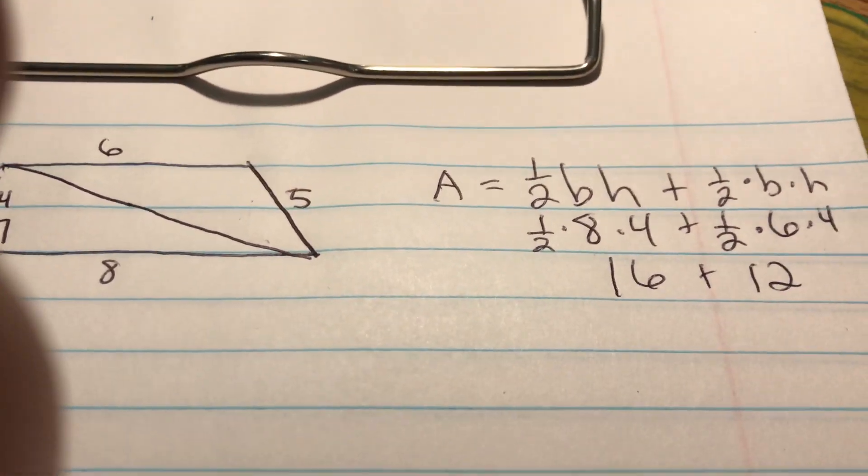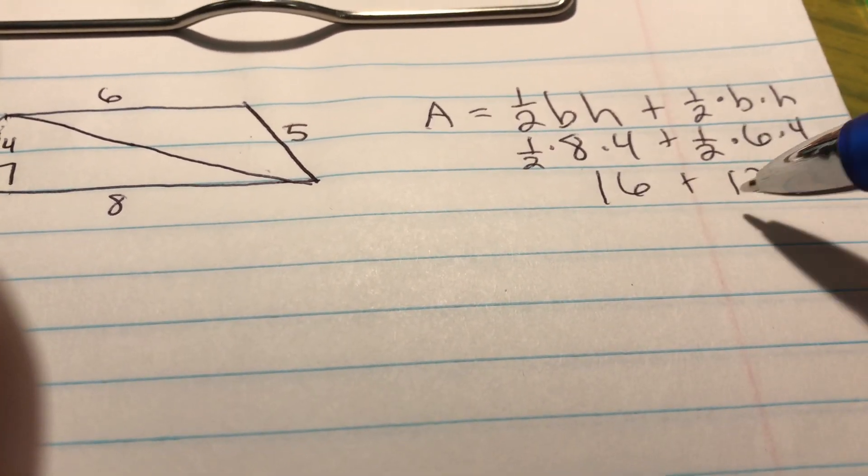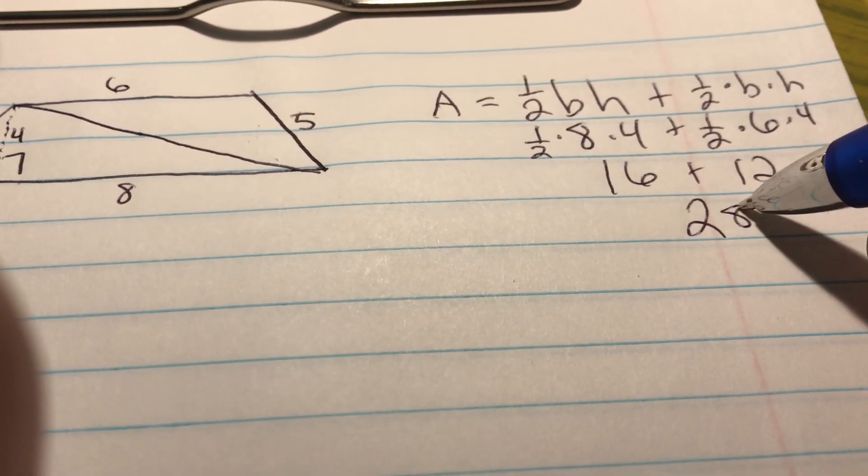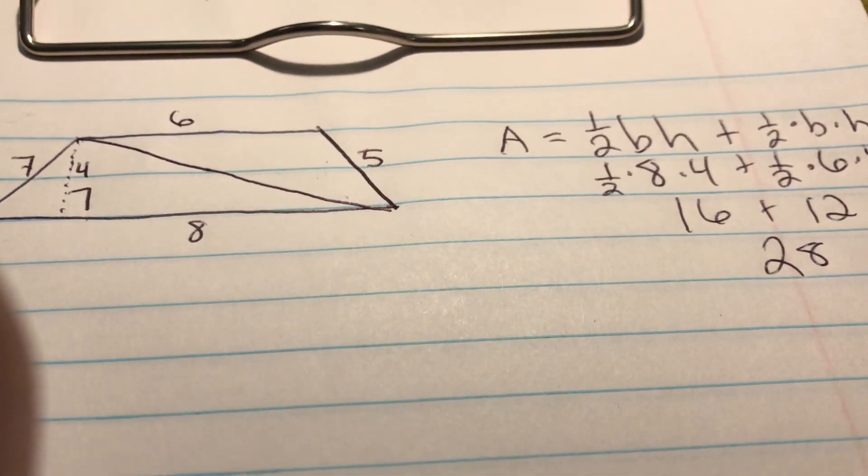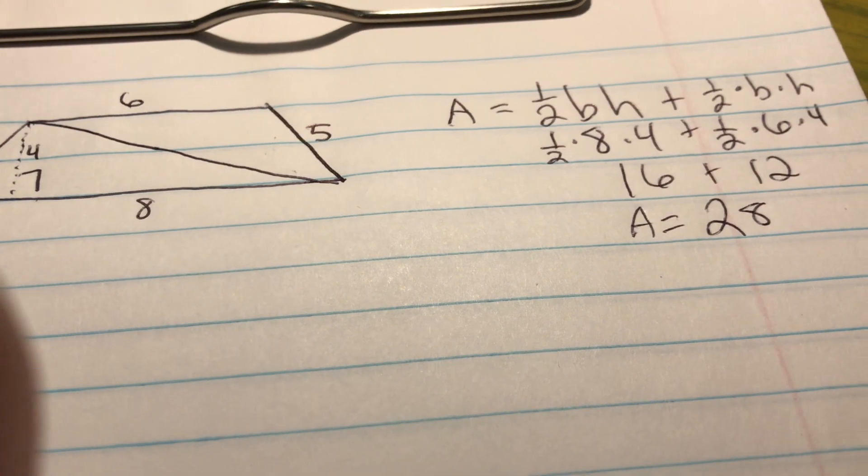I'm trying to look through the camera here to make sure I'm not cutting you off here. All right? And then we just add 16 plus 12, and we get 28 for the area of this trapezoid. So the area of this trapezoid is equal to 28 square units.